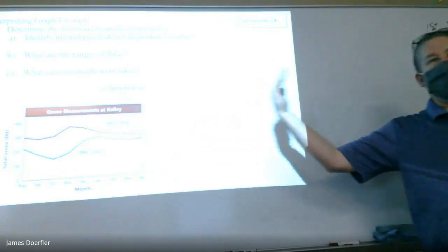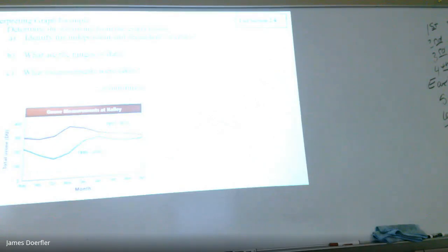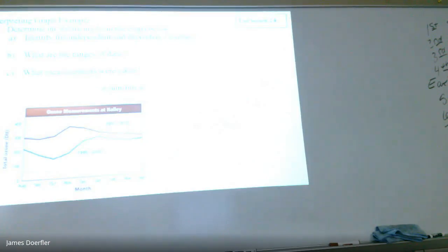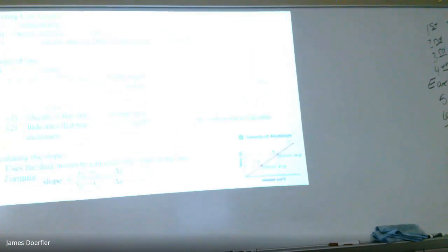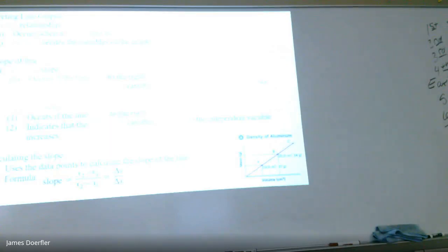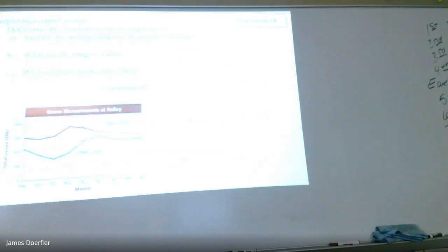The measurements taken were Dobson units of total ozone during those months. The last question: is this graph linear or non-linear? A linear graph has a best fit straight line with data points close to it. For this graph, a straight line would not have data points line up close to it at all — it's zigzaggy. So this graph is non-linear.